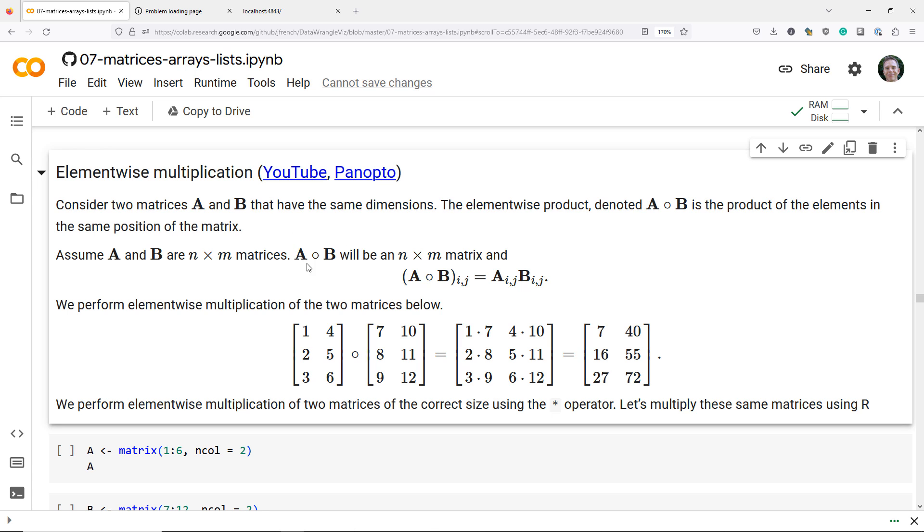And so the way that we denote the element-wise multiplication is this open circle thing here. This lets us know that we're not doing the standard approach for matrix multiplication, that we are instead doing element-wise matrix multiplication.